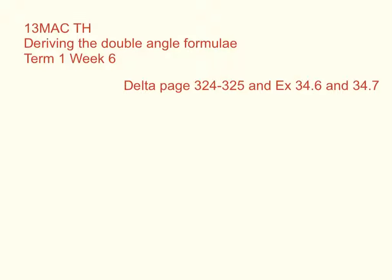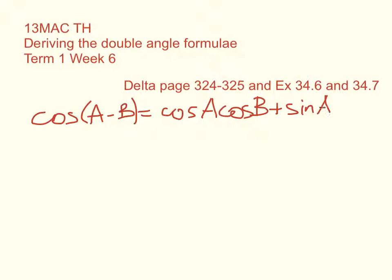So let's see our starting point. Remember the first compound angle formula that we looked at was this one, the cos of A minus B. And we had that that was equal to cos A, cos B, plus sin A, sin B.